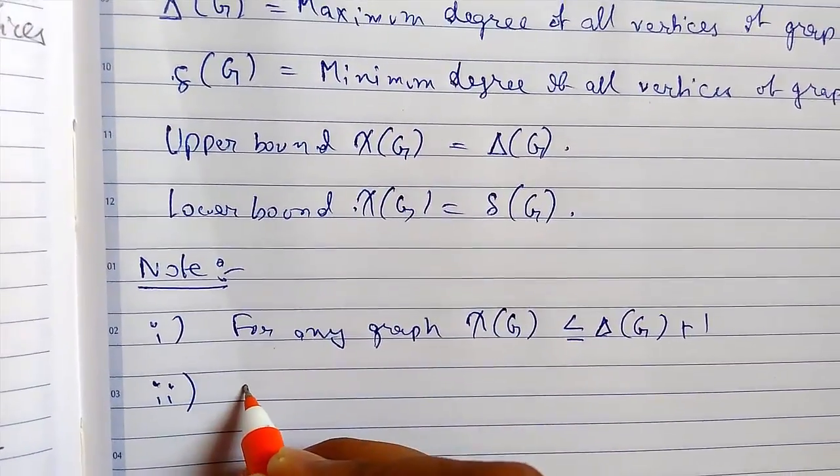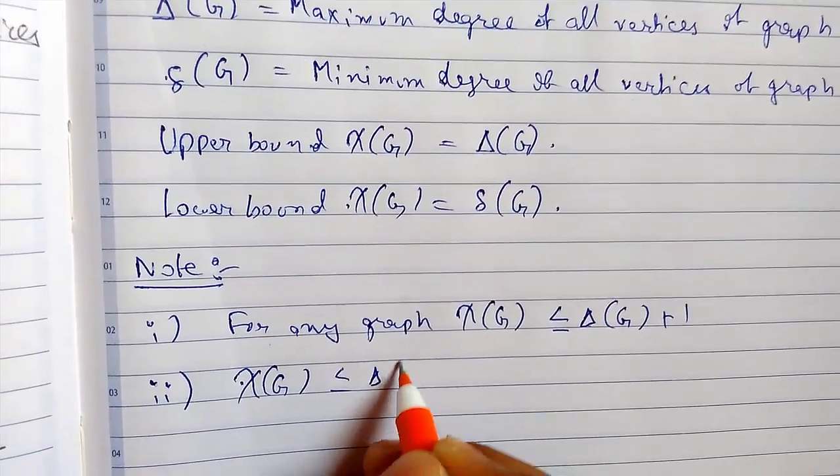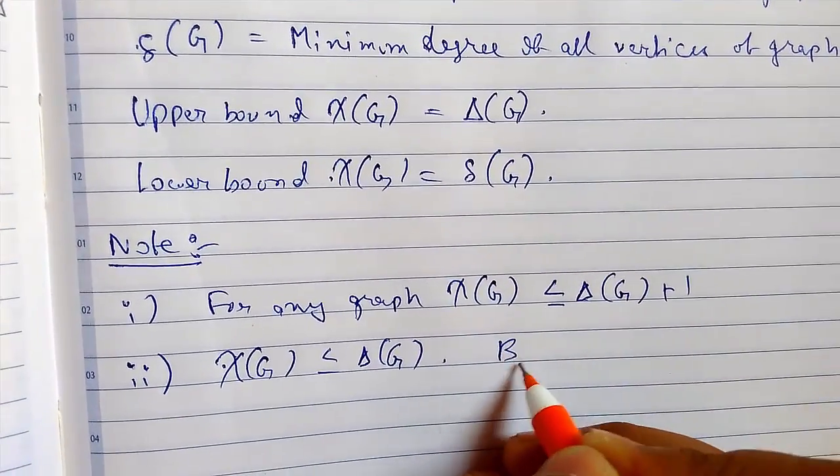Number two, χ(G) is less than or equals to Δ(G). This is known as Brooks theorem.